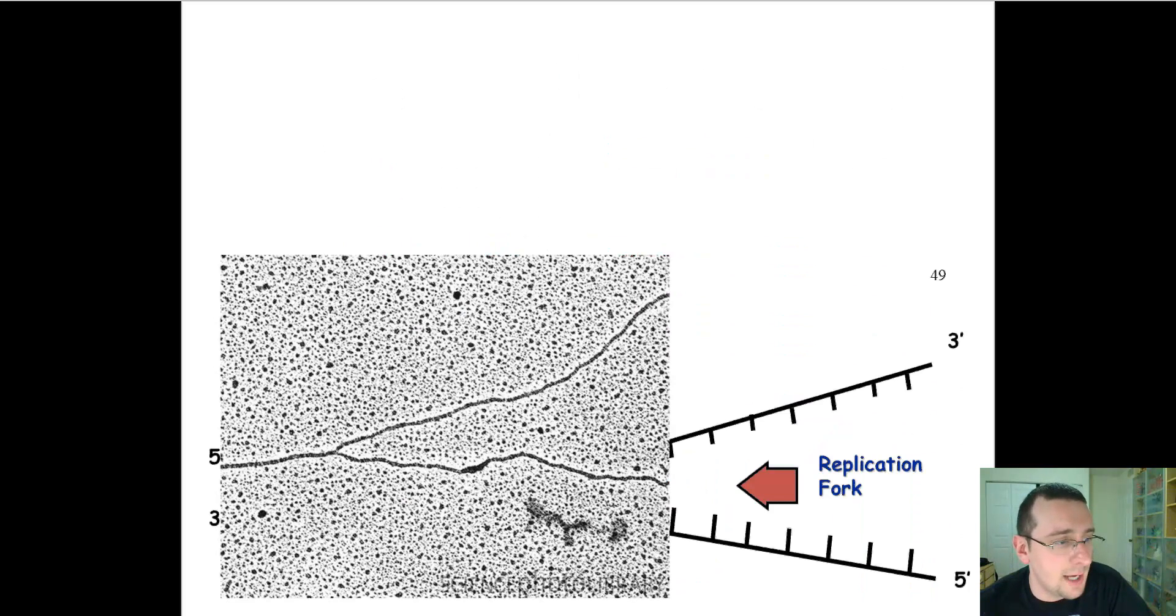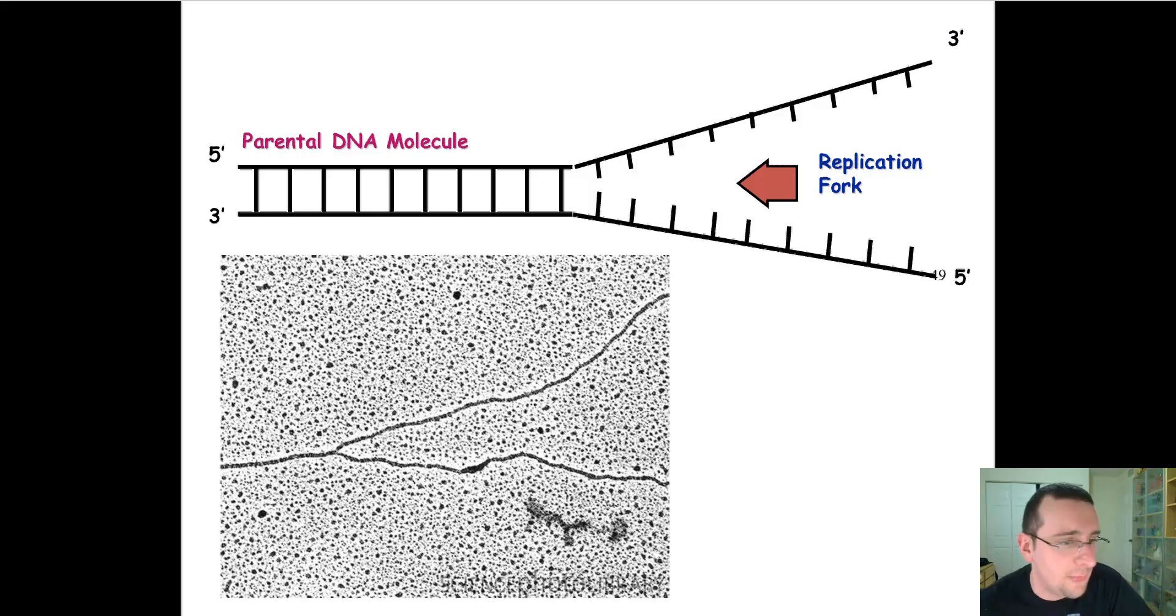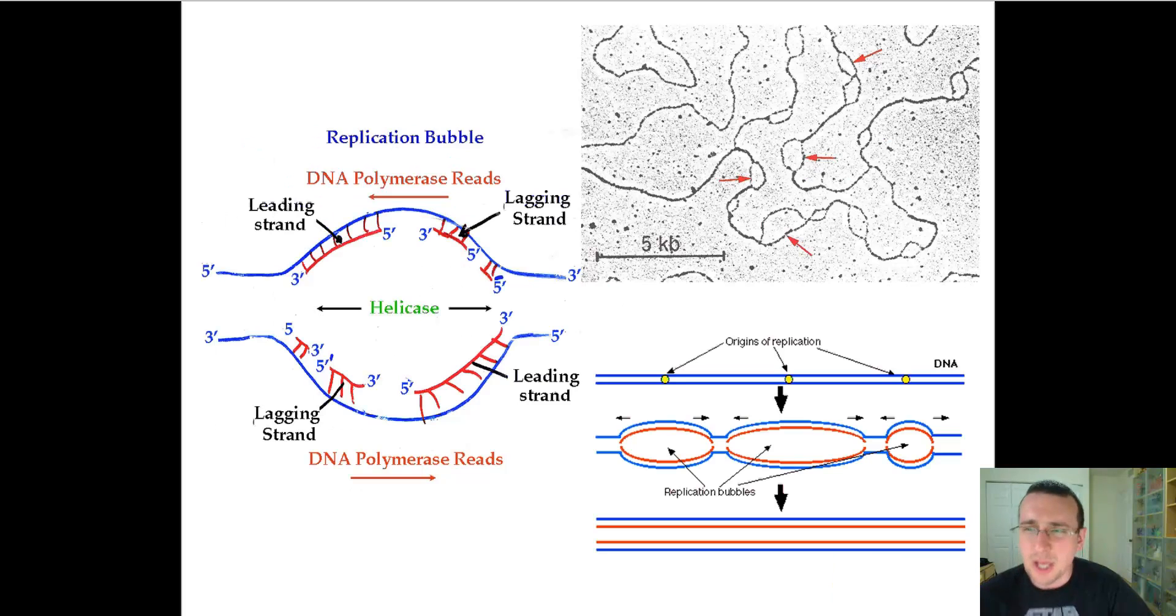And it all starts at the Y fork. Now, the Y fork is this funny little structure that happens once the DNA strand unzips, as you see here. And that is an actual electrical microscopic picture of what the Y fork actually looks like. If you pull back a little, though, from the Y fork, you will see that it's not actually a fork, but more like a bubble that the DNA copies itself.